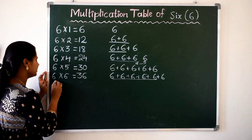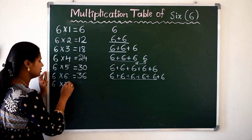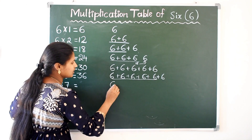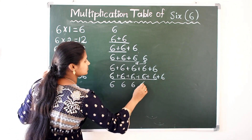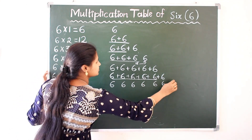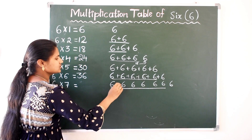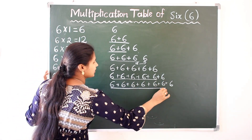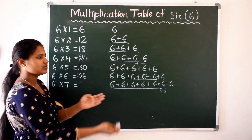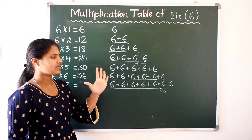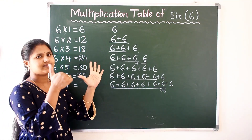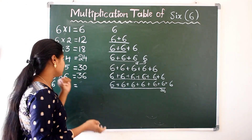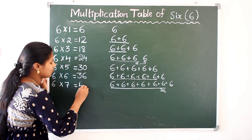Next, 6 7s are. 6 seven times — see how much. So 6 six times we got 36, right. 36 plus 1 more 6 — 37, 38, 39, 40, 41, 42. So 6 7s are 42.